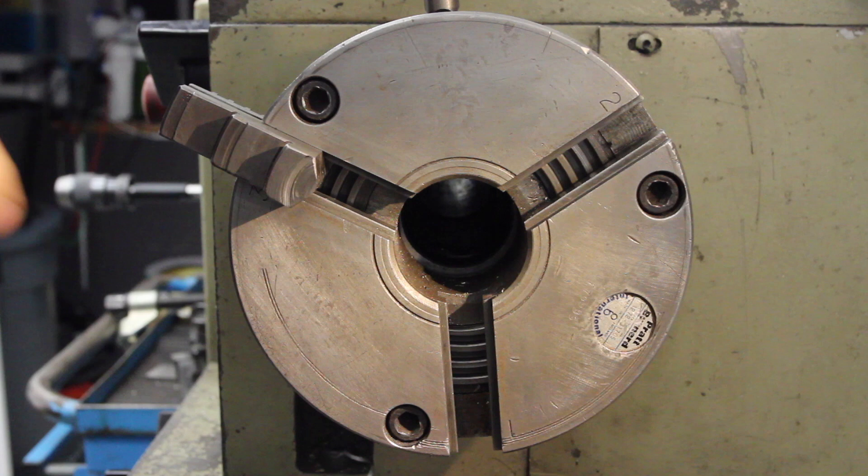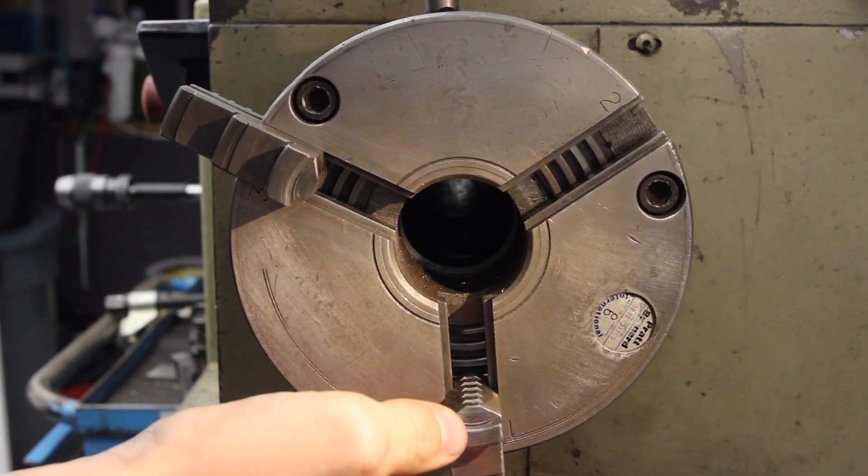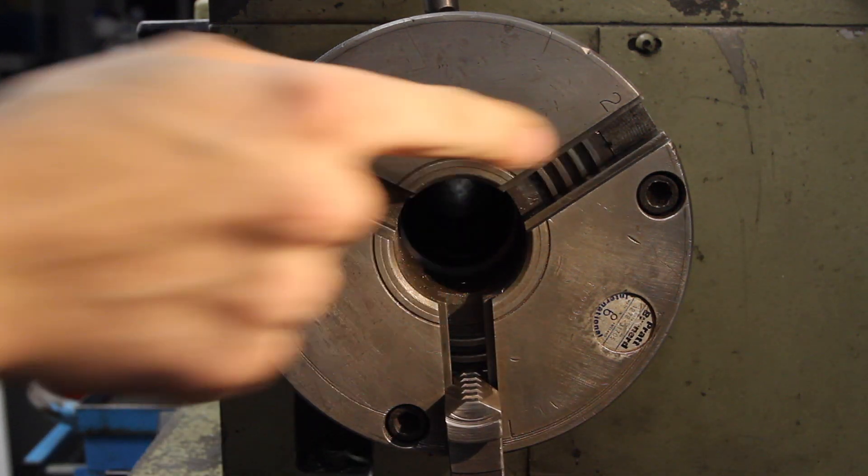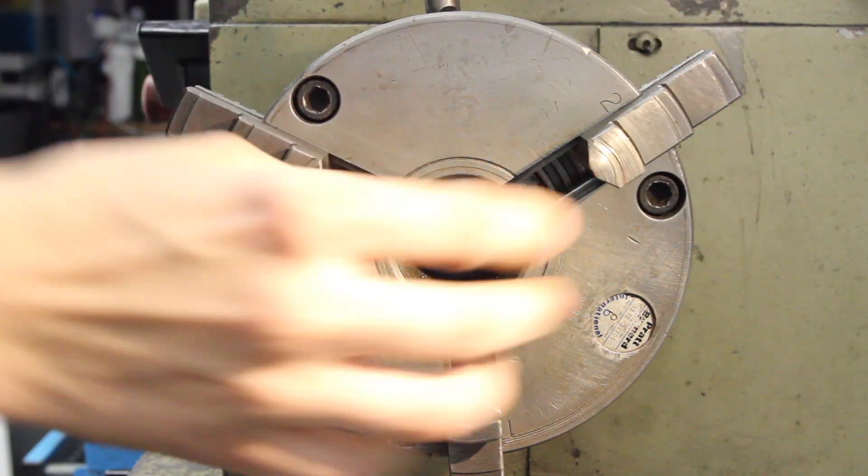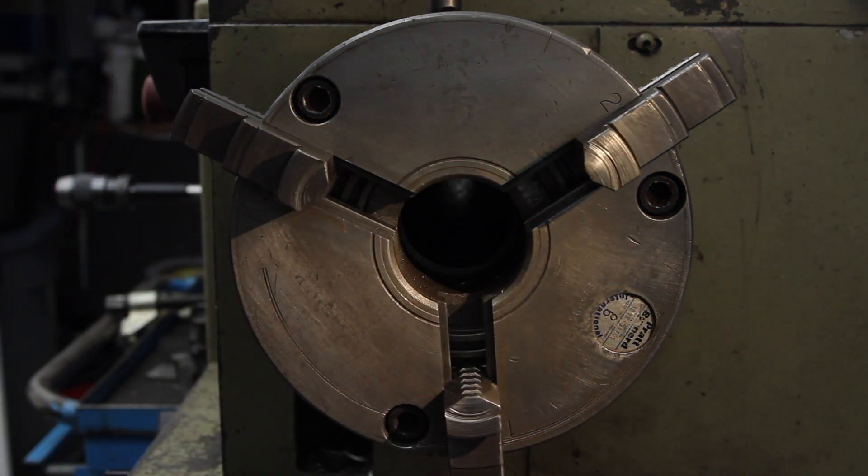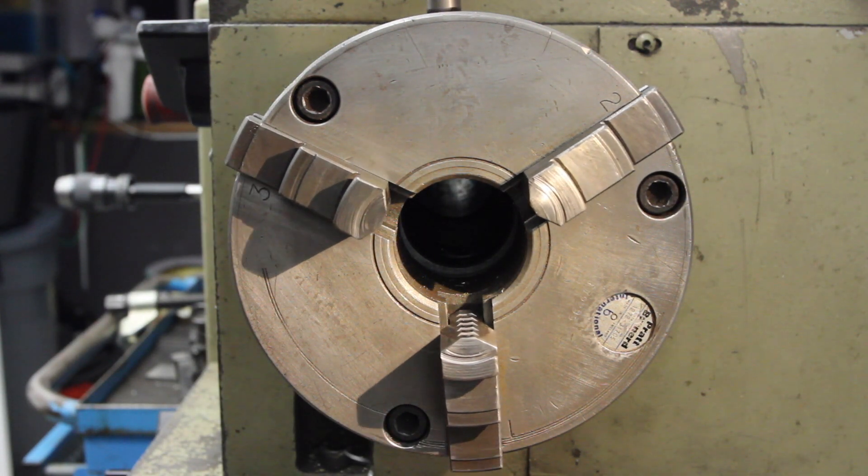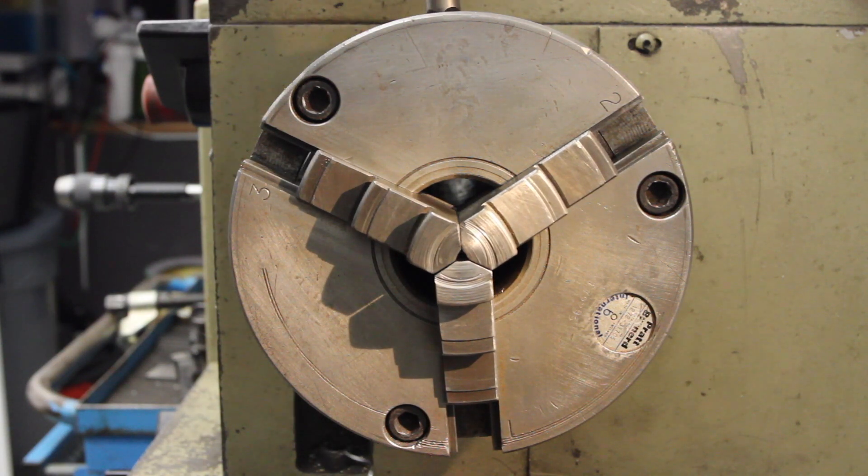Turn it back a bit, put in your next jaw, until you see it in the next slot over here, and put in jaw three. And now all of your jaws are in there. They are perfectly on center.